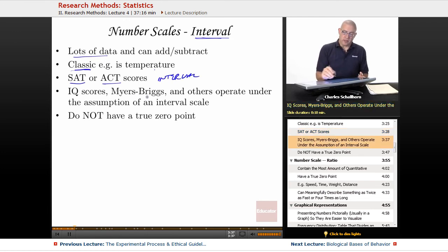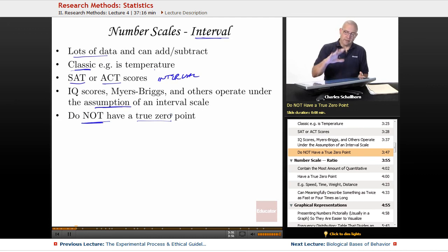Now things like the IQ scores, the Myers-Briggs, and others operate under the assumption of an interval scale. But with an interval scale, although we can do mathematics with them, there is no true zero point. And so that's going to be a distinction between the interval and the next one.